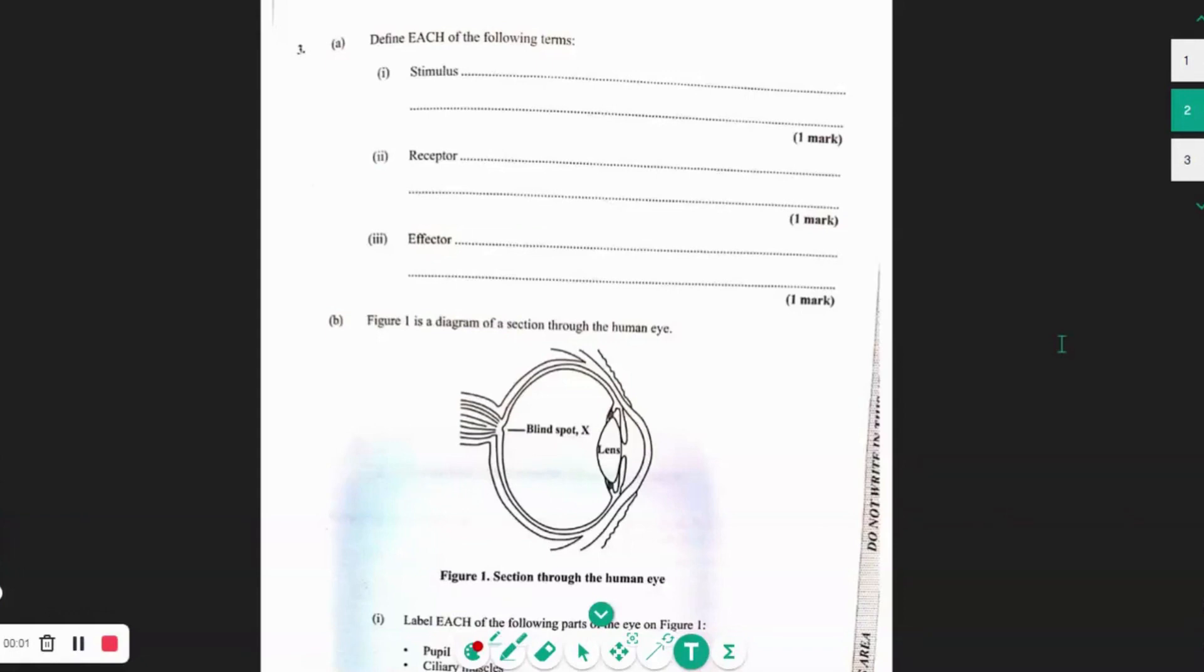We'll be looking at question 3 here. The first thing they're asking us to do is to define each of the following terms. So they want to know what a stimulus is, what a receptor is, and what an effector is.